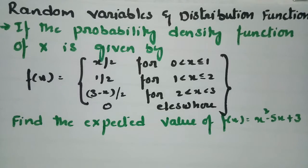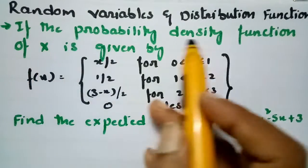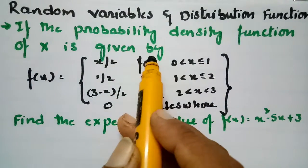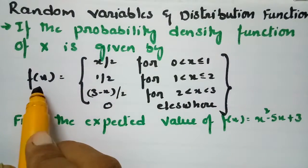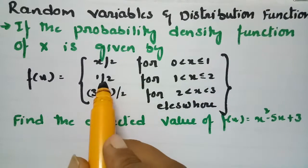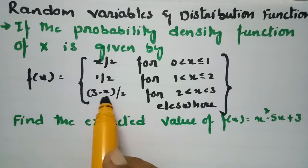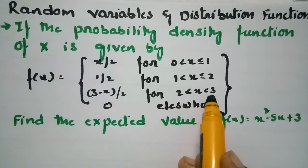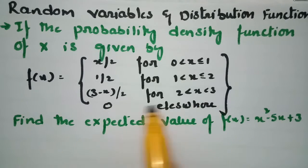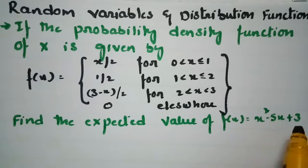This problem is from random variables and distribution functions. The probability density function of x is given by: f(x) = x/2 when x lies between 0 and 1, f(x) = 1/2 when x lies between 1 and 2, f(x) = (3 - x)/2 when x lies between 2 and 3, and 0 elsewhere. We have to find the expected value where φ(x) = x² - 5x + 3.